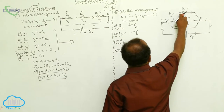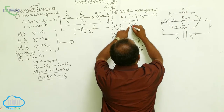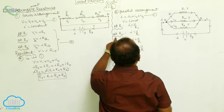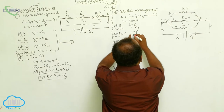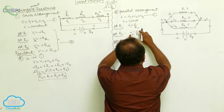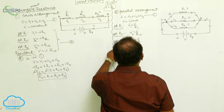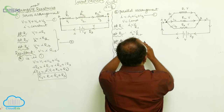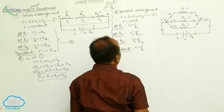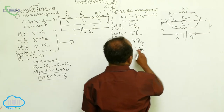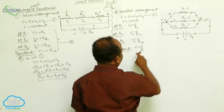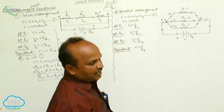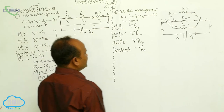At R1: current is I1, potential difference is V, resistance is R1. Across R2: current is I2, potential is V, resistance is R2. Across R3: current is I3, resistance is R3, potential is V. For the resultant as a whole: total current is I, total potential is V, total resistance is Rp — the effective or resultant resistance, represented by Rp.